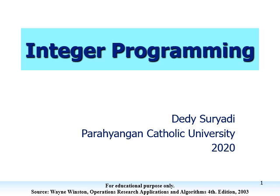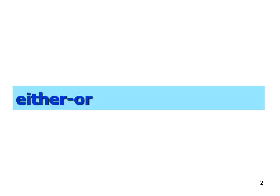This is the fourth section of the topic integer programming. The materials in this presentation correspond to section 9.2 in your textbook. Previously we've seen problems in which the variables need to be integer, so we formulate those problems into integer programming. Now in this section we're going to see how we can use integer programming to formulate other types of problems — for example, the either-or problem.